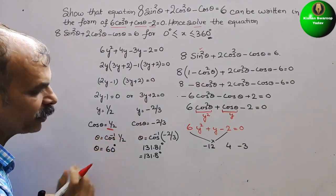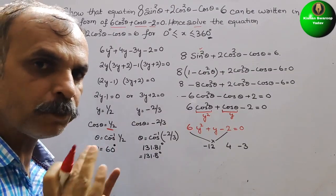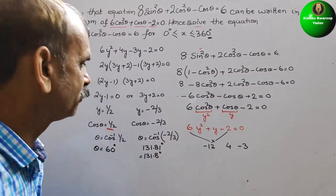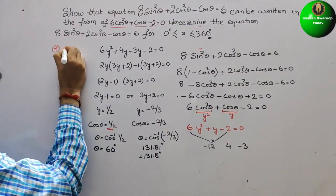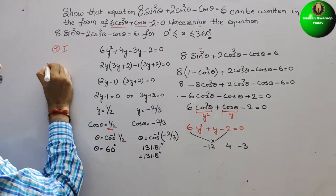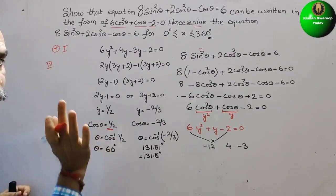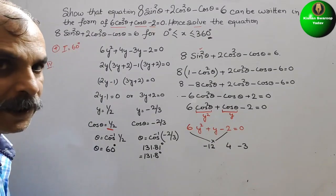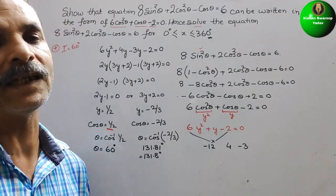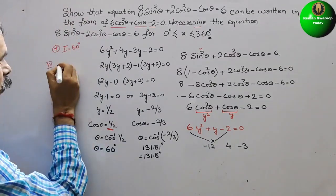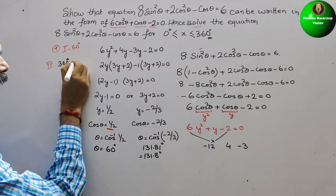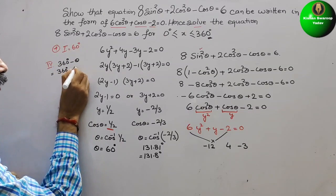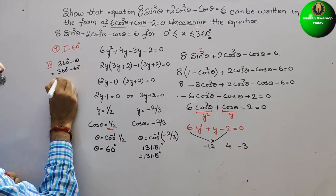Since cosθ = 1/2 is positive, cosine is positive in the 1st and 4th quadrants. In the 1st quadrant: θ = 60°. In the 4th quadrant: θ = 360° - 60° = 300°.